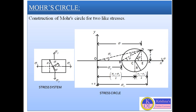When tensile stresses are positive, they are plotted to the right side of origin O. Compressive stresses are negative and plotted to the left side of origin O. Tangential stresses are taken as positive when they give anticlockwise rotation of the element and are plotted downward or below the axis. If tangential stresses cause clockwise rotation, they are negative and plotted above the axis. The angle θ is positive when in the anticlockwise direction. This is the sign convention for Mohr's circle.